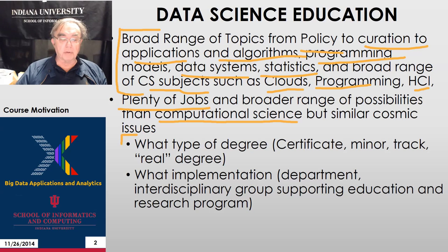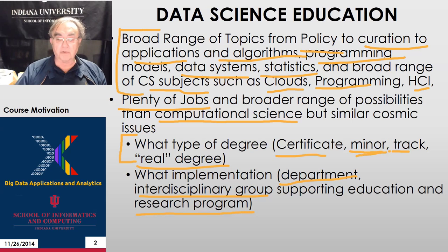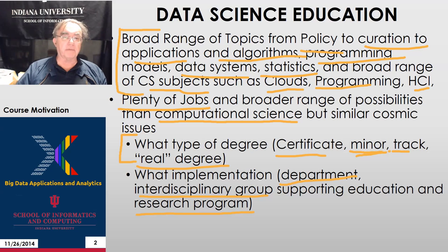Whenever you do new degrees, you have to ask what type of degree: certificate, minor, track, or a real degree. We're doing a real degree for masters, maybe a track for PhD. We have a certificate and a minor already. We have to decide how to implement a new department or an interdisciplinary group, and whether to support just education or education and research. We're tending to focus on just supporting education at Indiana at the moment, because data science research tends to be driven by individual faculty, whereas education is a group activity.